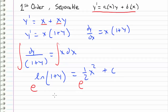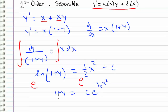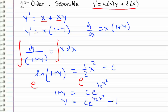So now we can take the exponential of both sides. What we get is 1 plus y is equal to c e to the one-half x squared. And then I can move the 1 to the other side, so I get a final answer for our general solution as y is equal to c e to the one-half x squared minus 1.